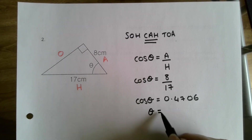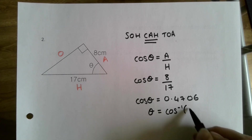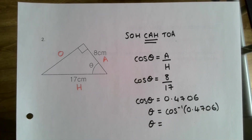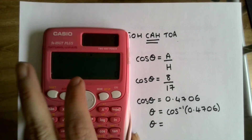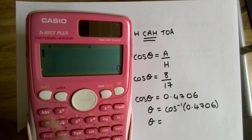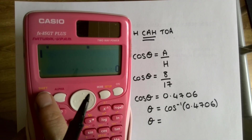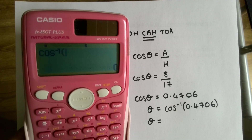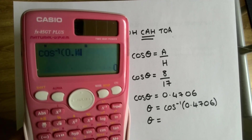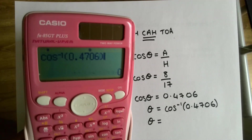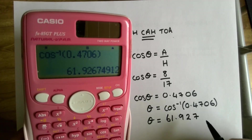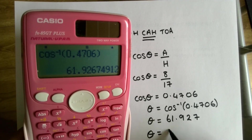8 divided by 17 gives us 0.4706. Now we need to do the opposite of cos, which is cos⁻¹. So the next line is: θ = cos⁻¹(0.4706). To get cos⁻¹ on the calculator, hit Shift then cos. Type in 0.4706, close the bracket, and hit equals. That gives me 61.927, which to three significant figures is 61.9 degrees.